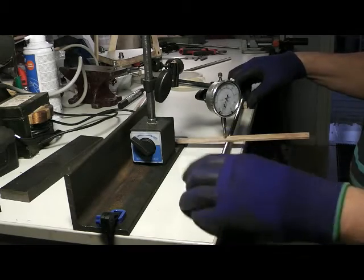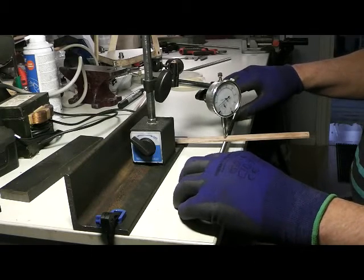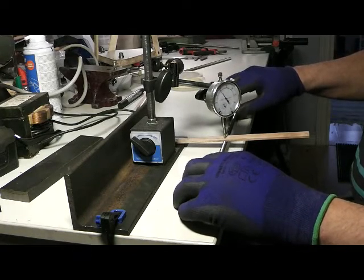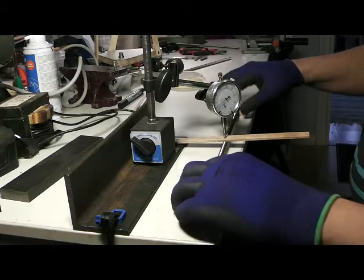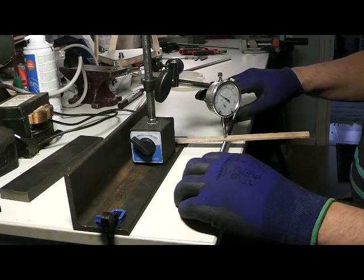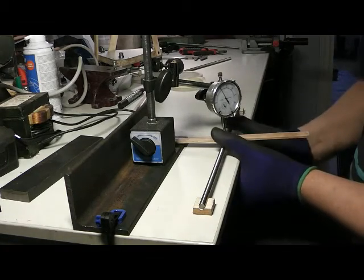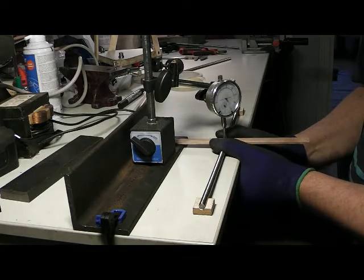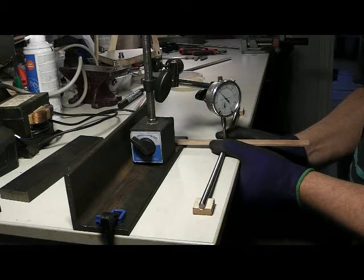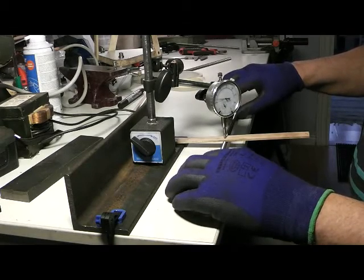But it doesn't get straightened by this. This was just measuring. So to actually straighten the rod, you start with the fundamental frequency, and you turn it to the highest peak, where the dial indicator indicates the highest height.